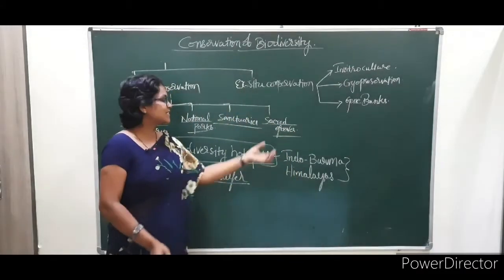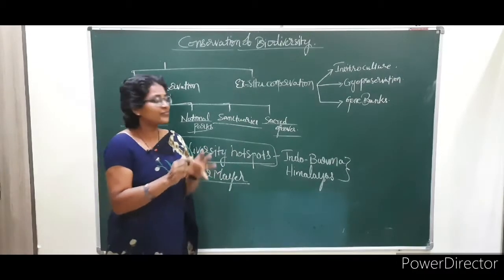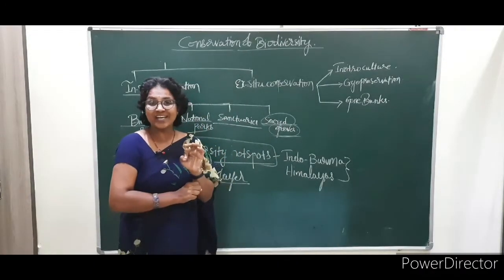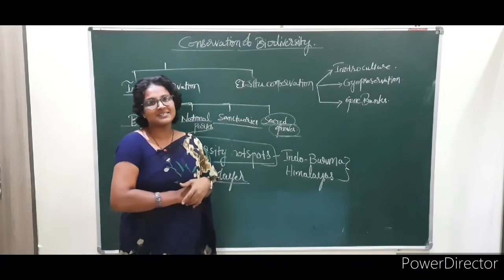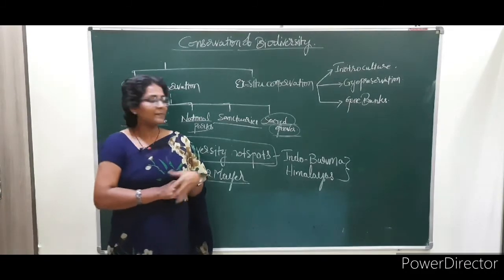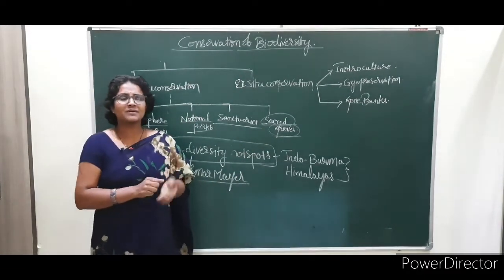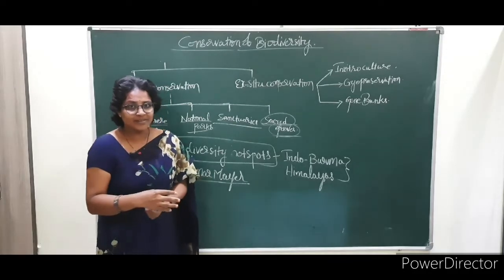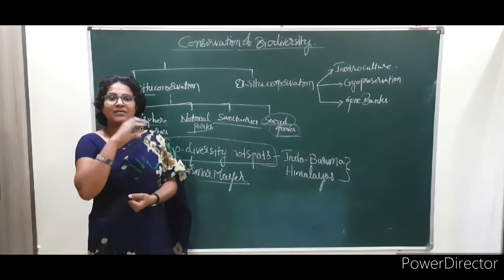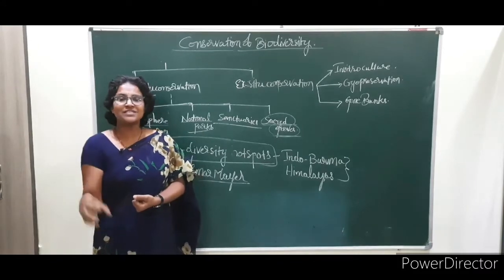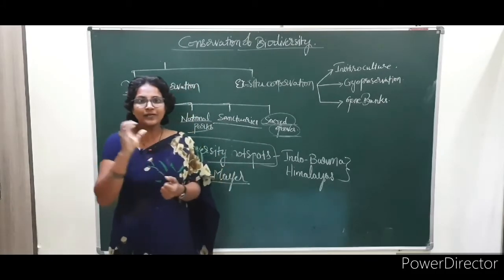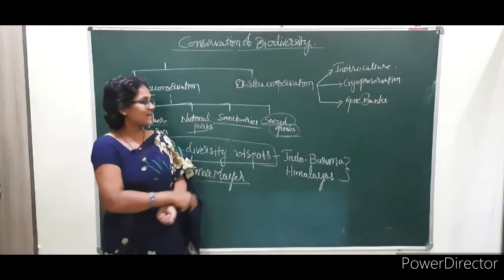Sacred groves are groups of plants — smaller than a forest — that have religious importance. For example, we pray to particular plants like the money plant, Tulasi plant, and Neem plant. Sacred groves are groups of plants that are venerated, meaning we pray to those particular plant species.